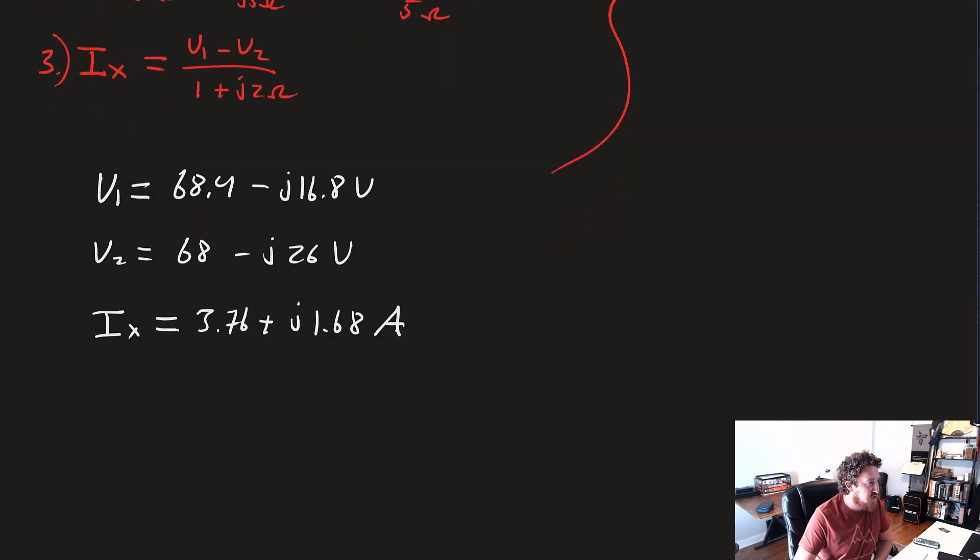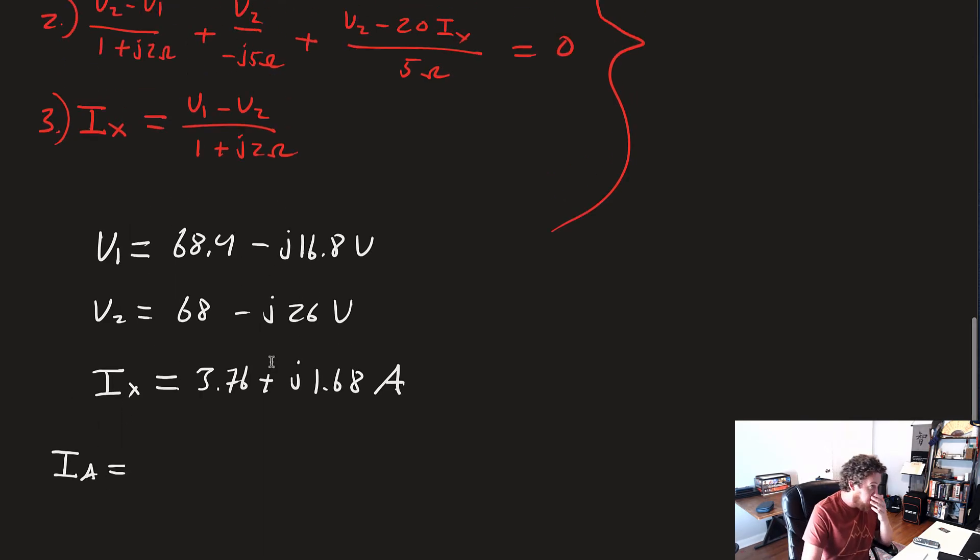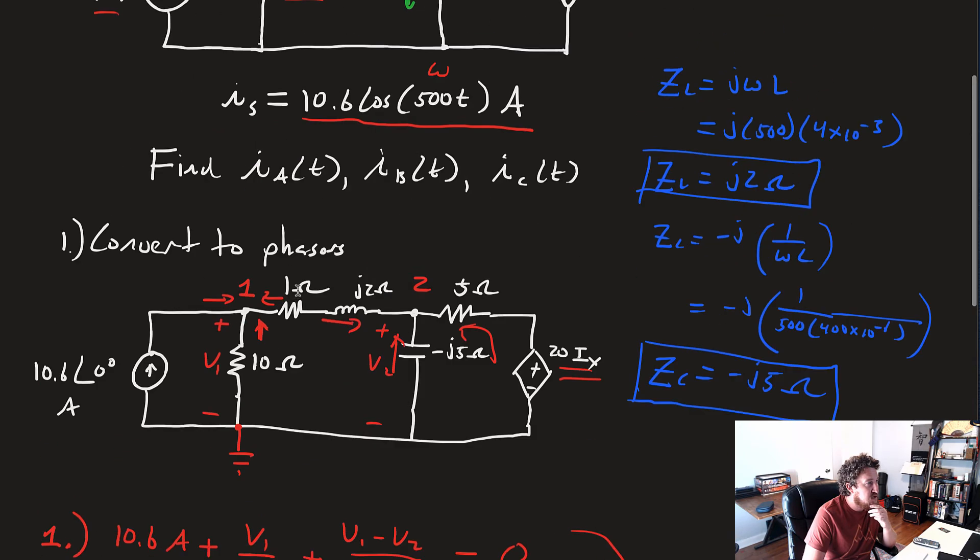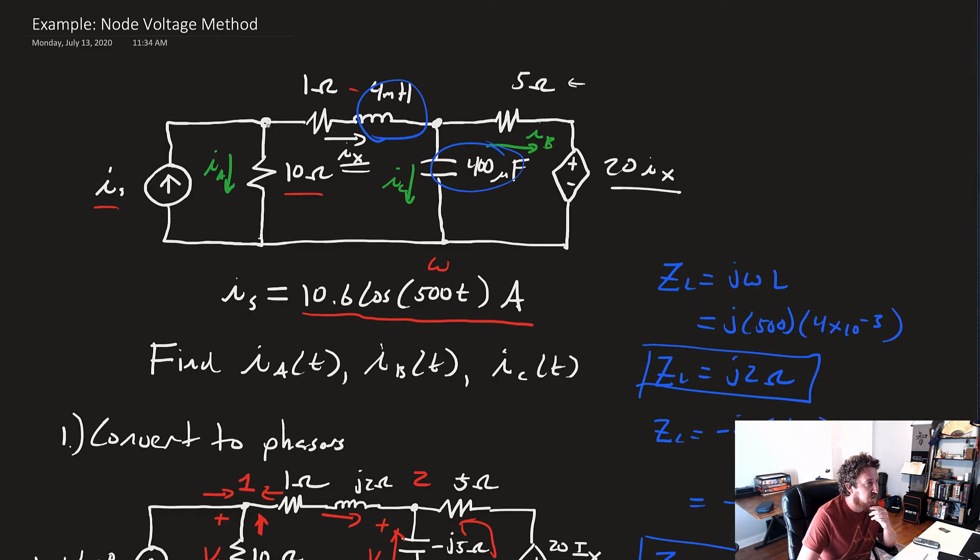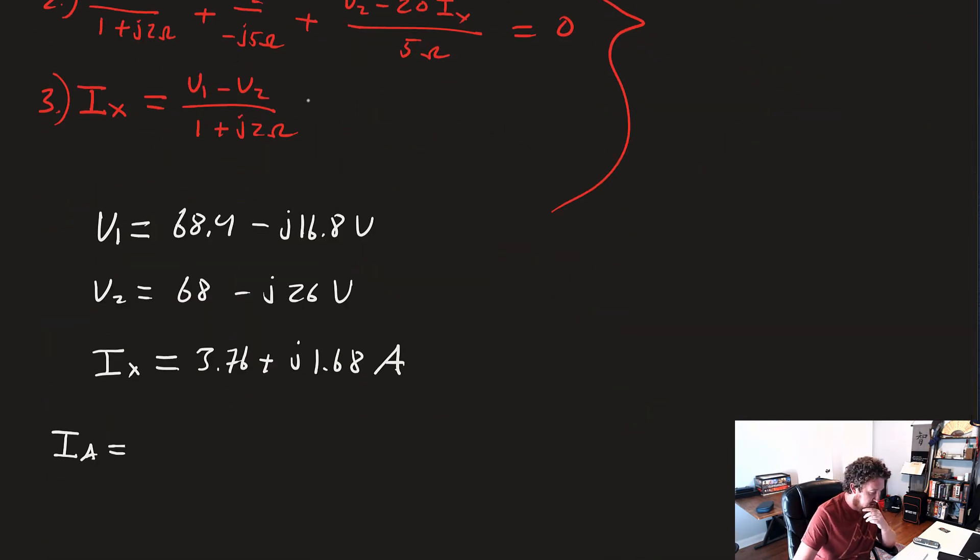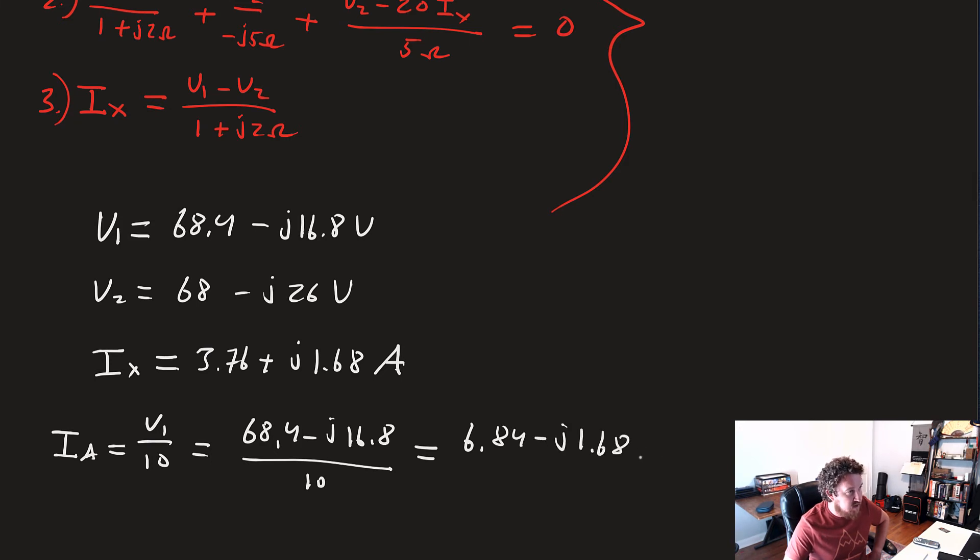Now we're ready to solve for the things we were hunting for. First, that current Ix of A, if we scroll back up, was the current flowing through this 10 ohm resistor. So Ix of A equals V1 over 10, that's 68.4 minus J16.8 over 10, which gives us 6.84 minus J1.68 amps.